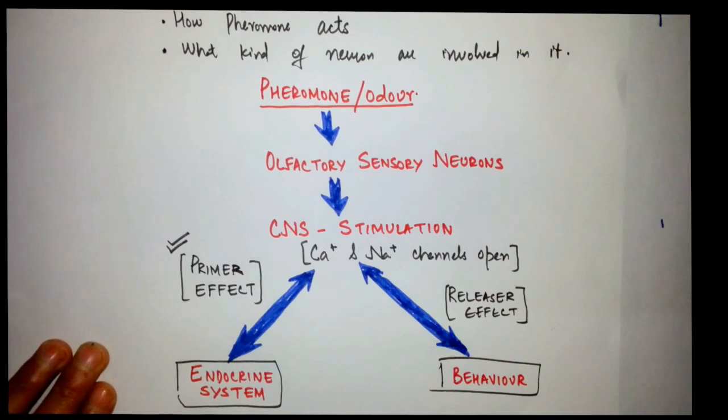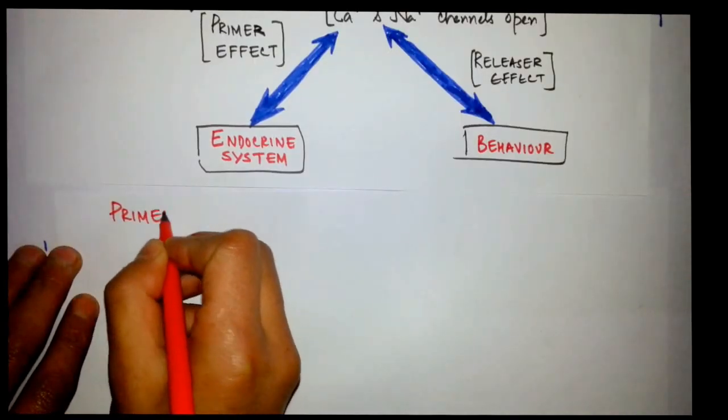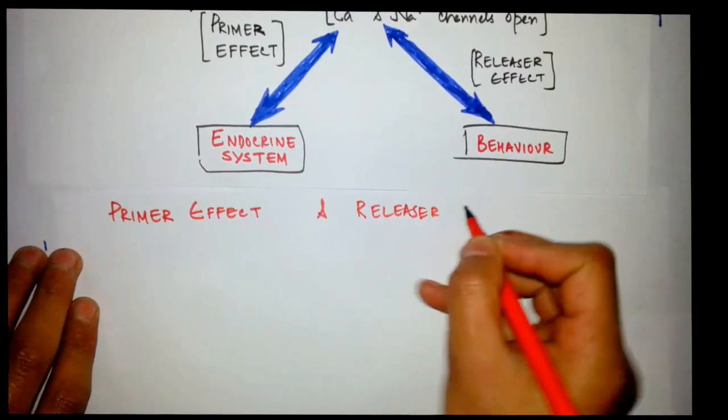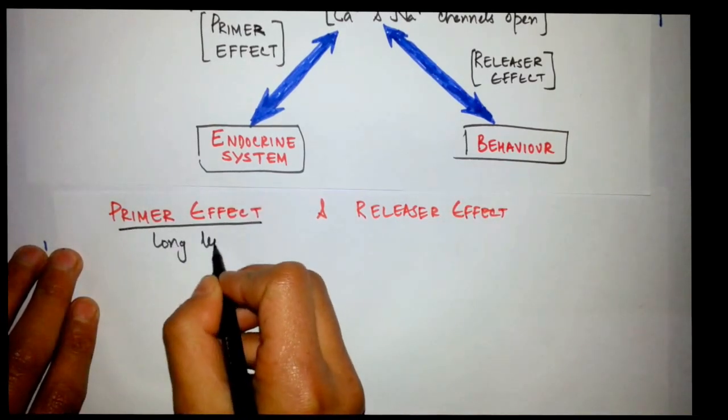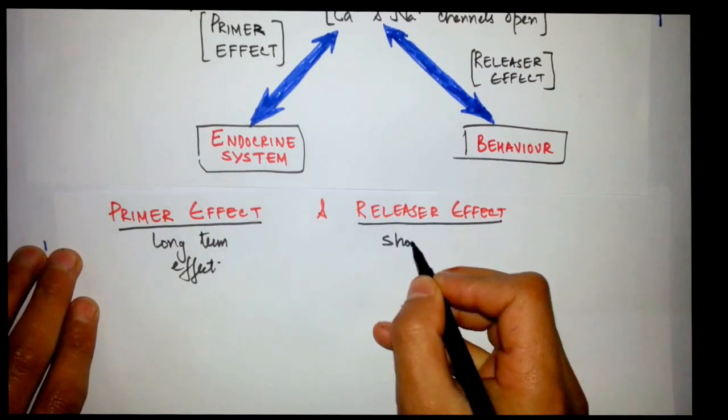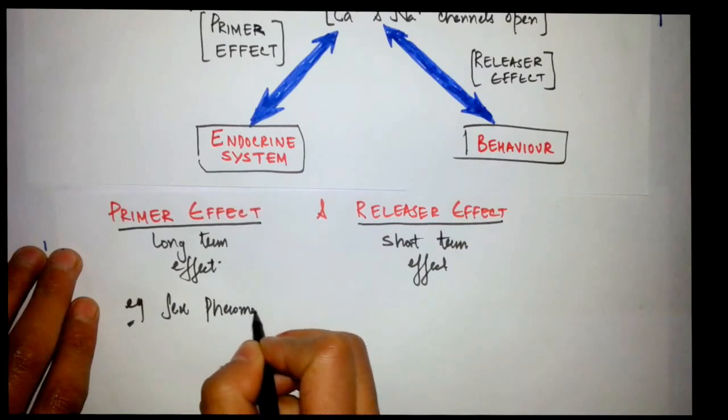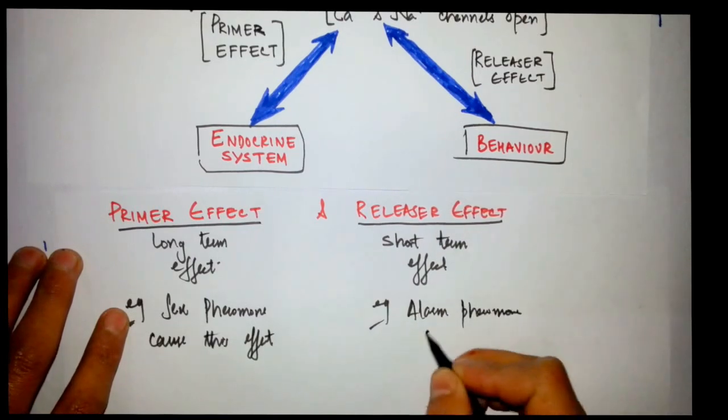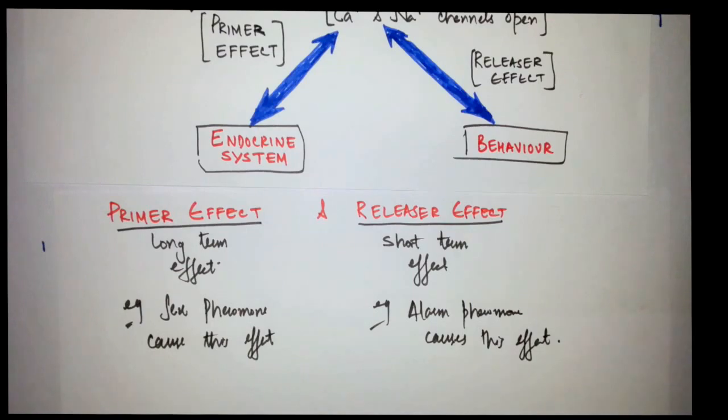So the main two points are endocrine system and behavior. Primer effect - just note it down - it's the long-term effect, and releaser effect is the short-term effect. Primer effect example: sex pheromone causes this effect. Releaser effect example: alarm pheromone causes this effect.